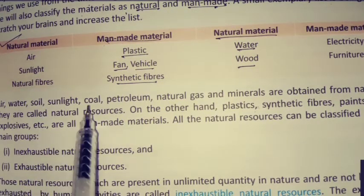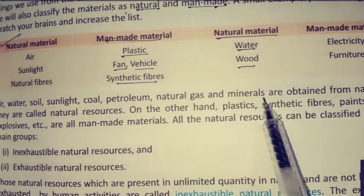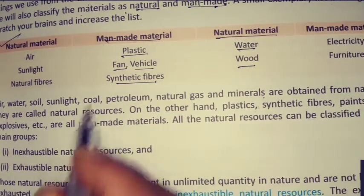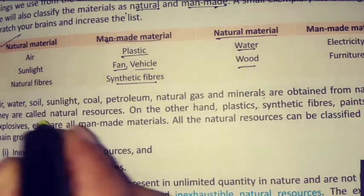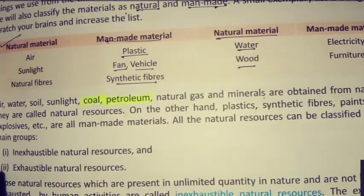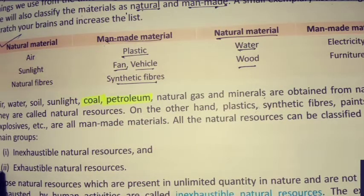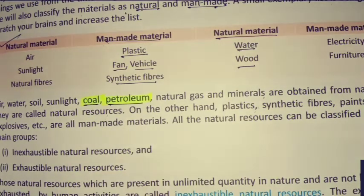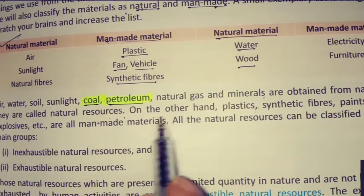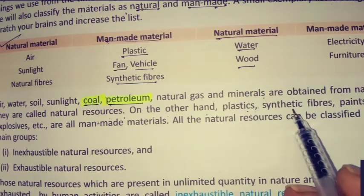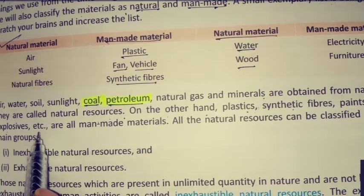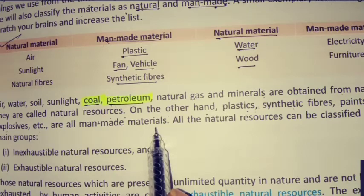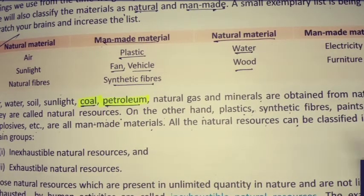Air, water, soil, sunlight, coal, petroleum, natural gas, and minerals are obtained from nature. In this chapter we are going to talk about coal and petroleum. We get coal from the fossil fuels — the remains of plants and animals buried under the soil for millions of years. On the other hand, plastic, synthetic fibers, paints, drugs, and explosives are all man-made materials.